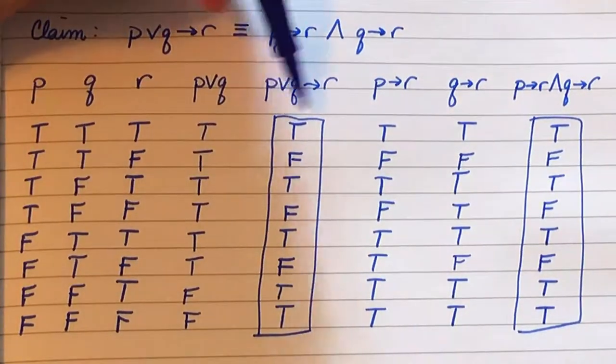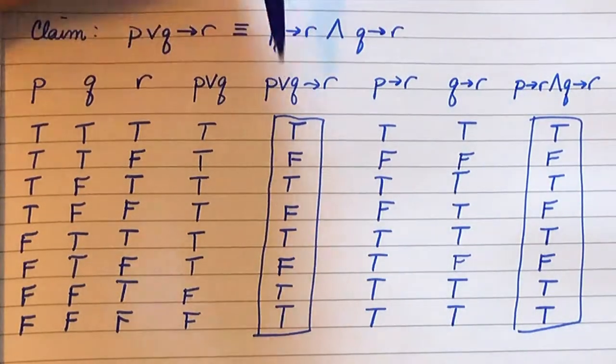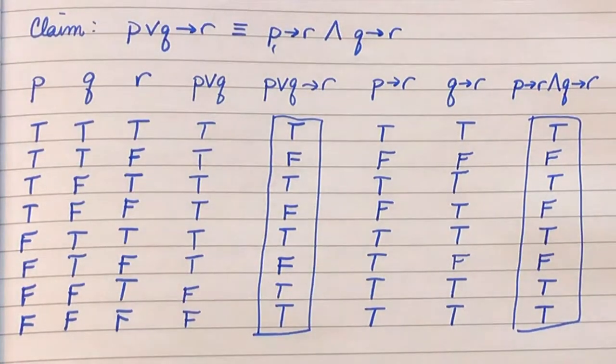And you can see that these two boxed sets of truth values are completely identical. Because they are identical, the two statement forms are logically equivalent.